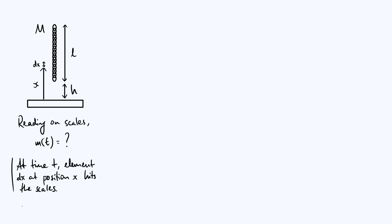At some arbitrary time t, the element which is just coming into contact with the scales is the element at position x with length dx. Two things that would be useful to know are: firstly, x as a function of time — in other words, which bit of the chain is hitting the scales at any given instant — and also how fast that element of the chain is going, because the speed of the element is going to determine how much impulse it exerts on the scales when it comes into contact with them.